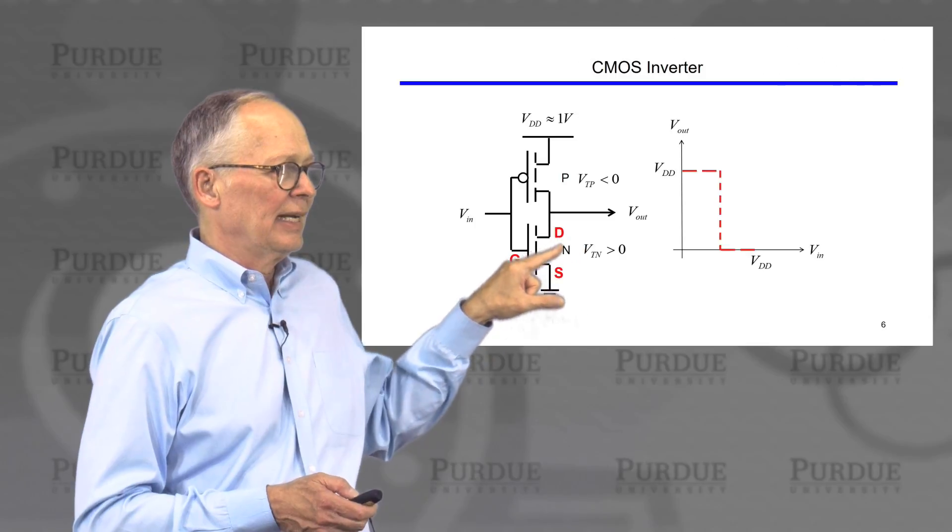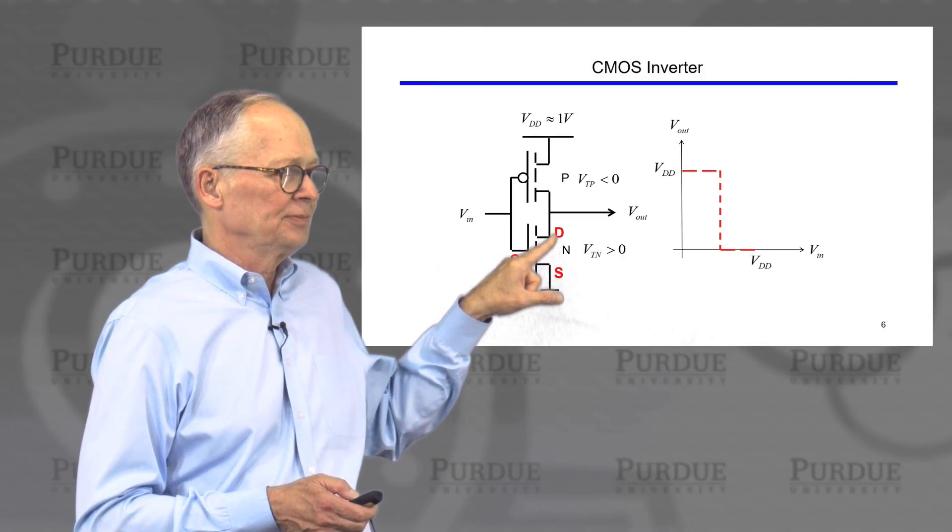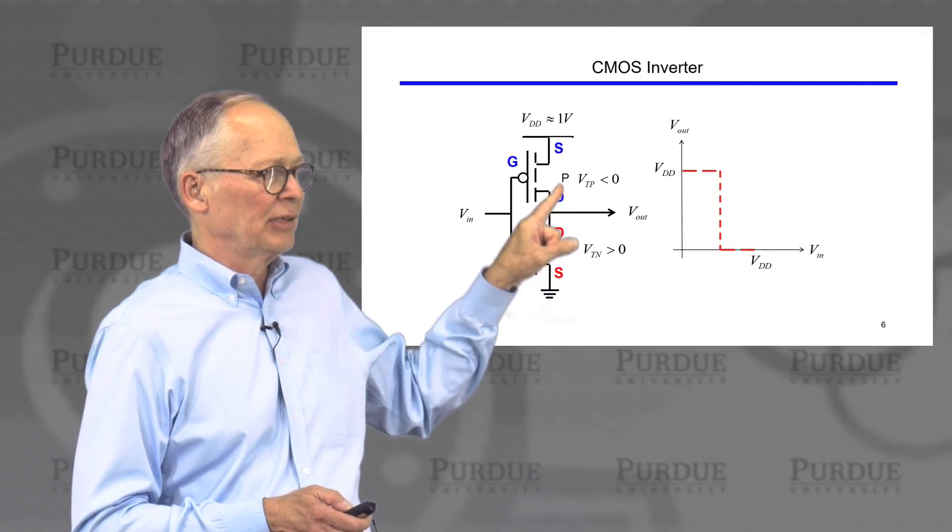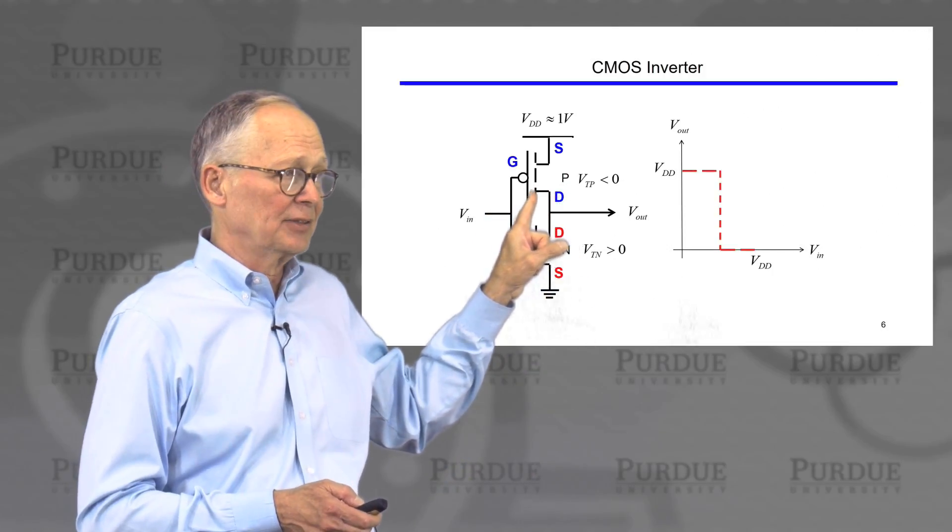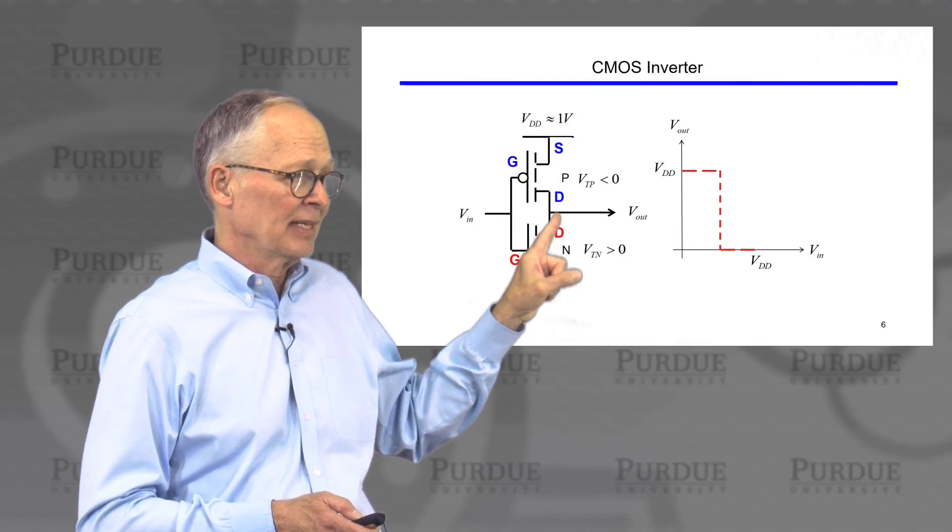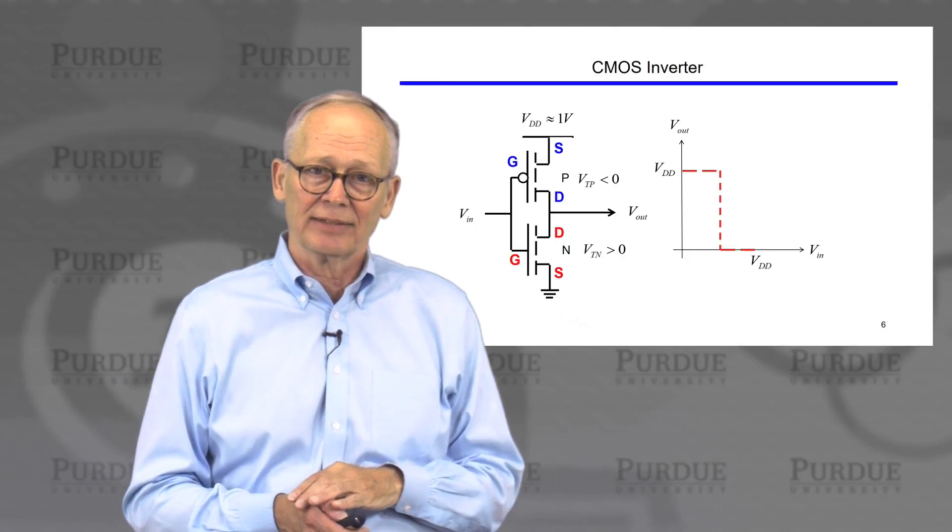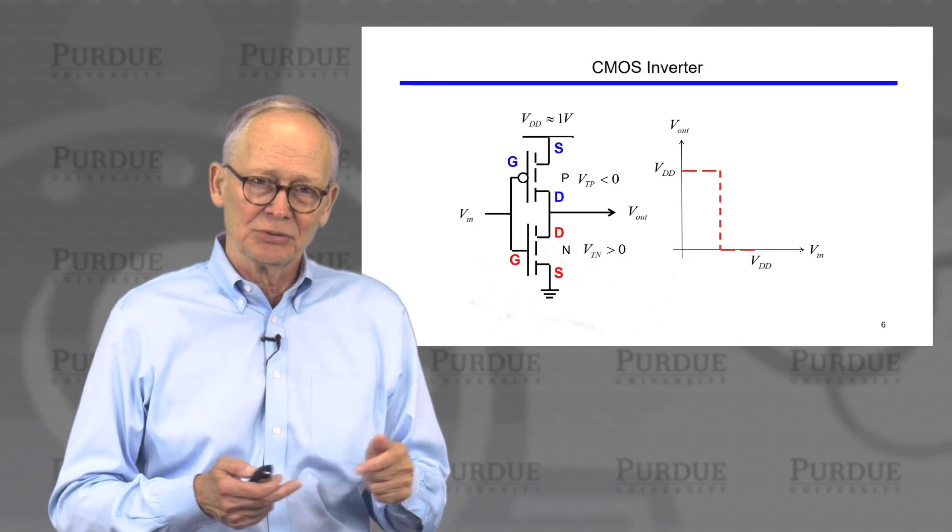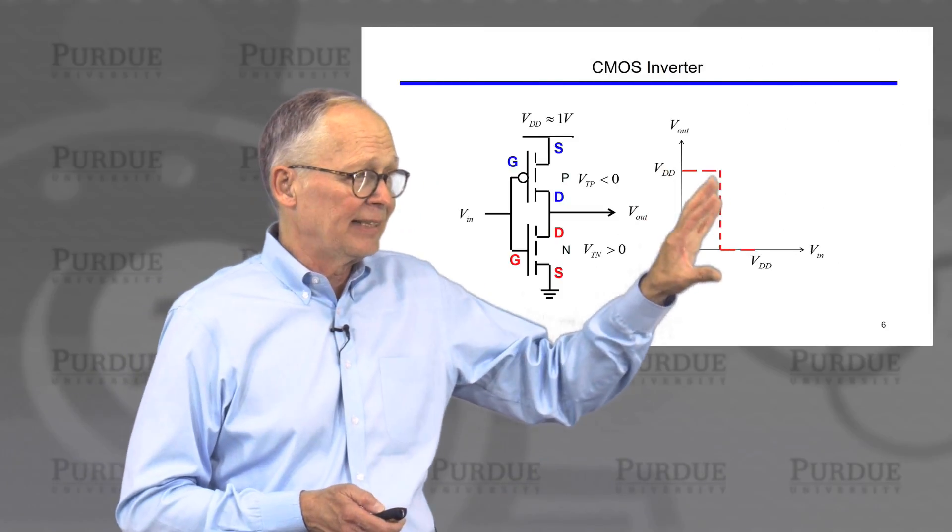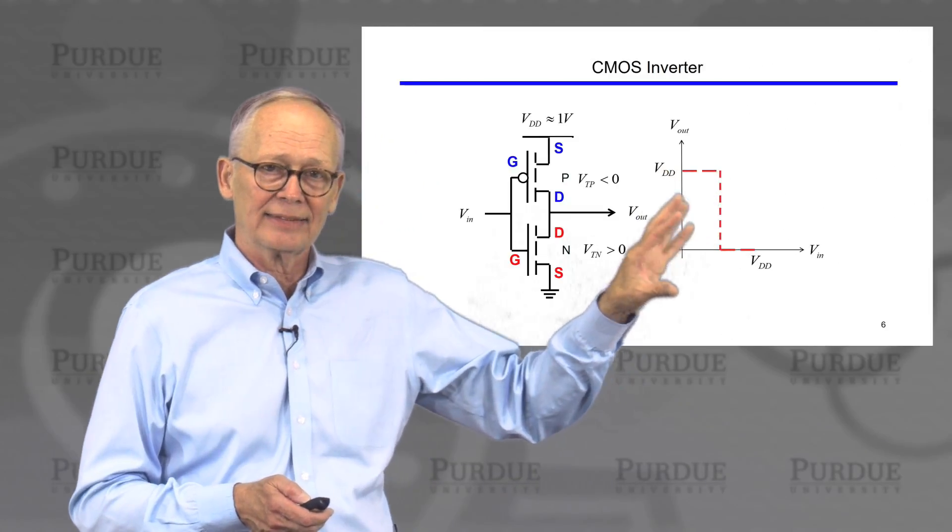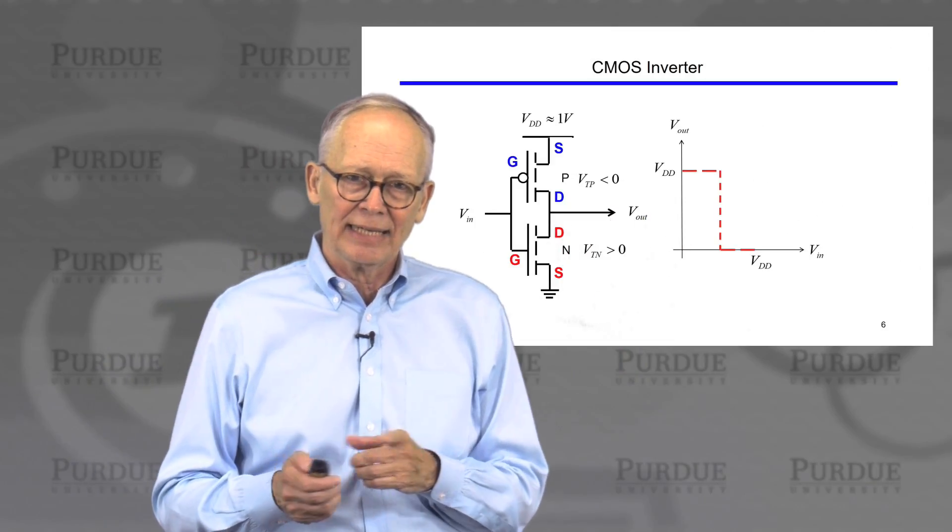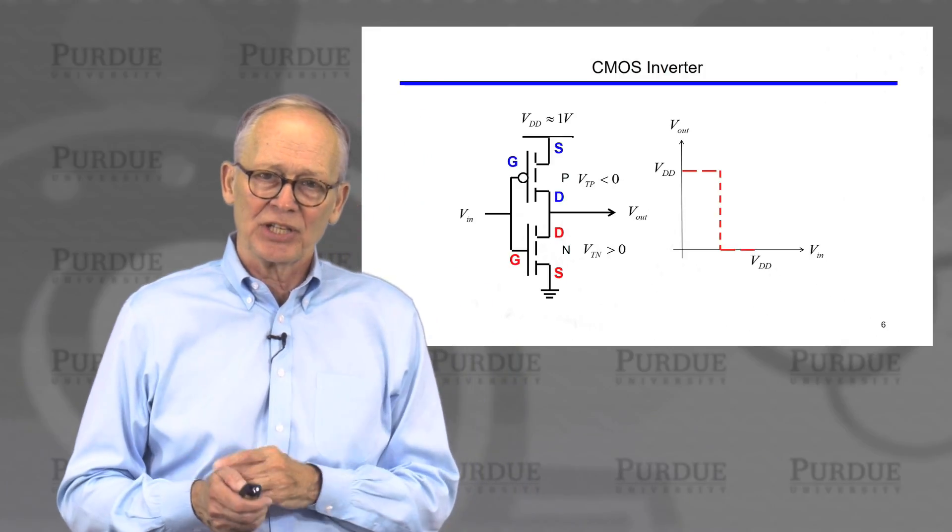The N-channel transistor has its source connected to ground, its drain connected to output, its gate connected to the input. The P-channel transistor has its gate also connected to the input, its source connected to the most positive voltage in the circuit, and its drain is also connected to the output. So the two drains are connected together, the two gates are connected together, the two sources are connected at different points. The ideal transfer characteristic has this shape that we described, and we can simply understand that by the NMOS and PMOS switching on and off.